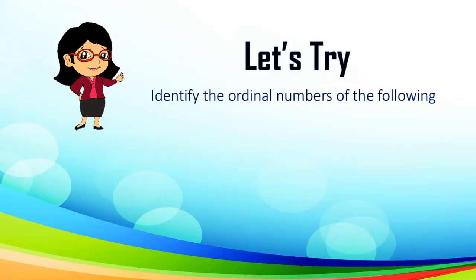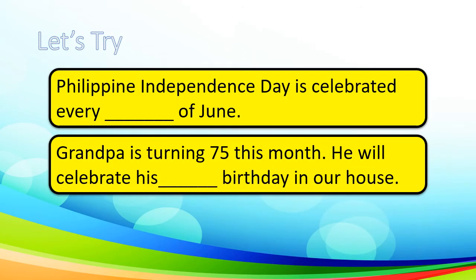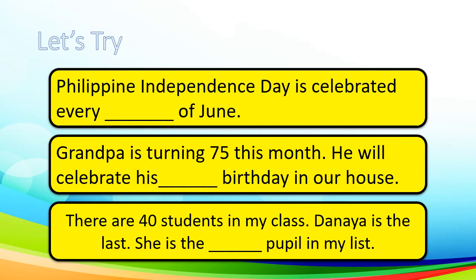Let's try to identify the ordinal numbers in the following. Christmas Day is celebrated every __ of December. Very good — twenty-fifth. New Year's Day is the __ of January. Very good — first. Philippine Independence Day is celebrated every __ of June. Very good — twelfth. Grandpa is turning 75 this month; he will celebrate his __ birthday. Very good — seventy-fifth. There are 40 students in my class and Naya is the last; she is the __ pupil in my list. Fortieth. Very good.